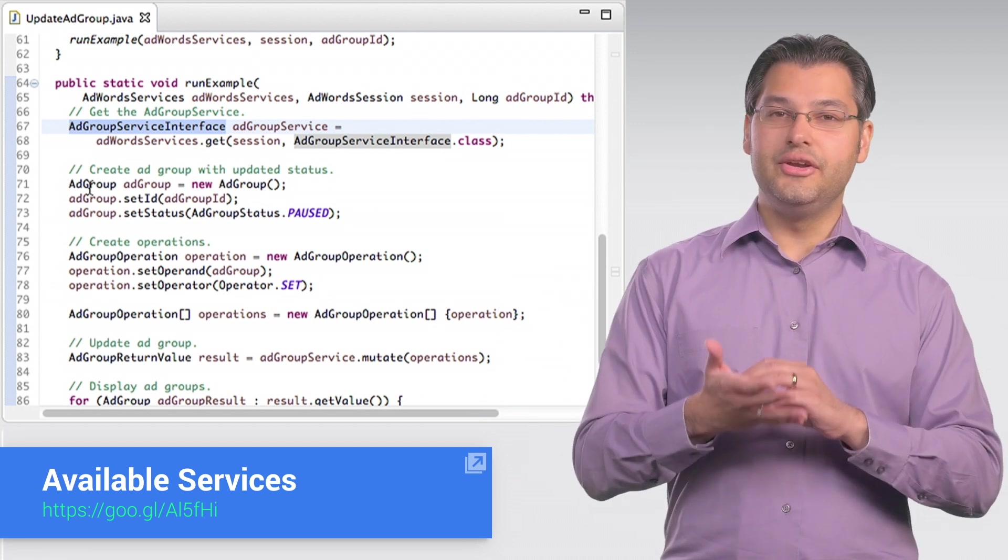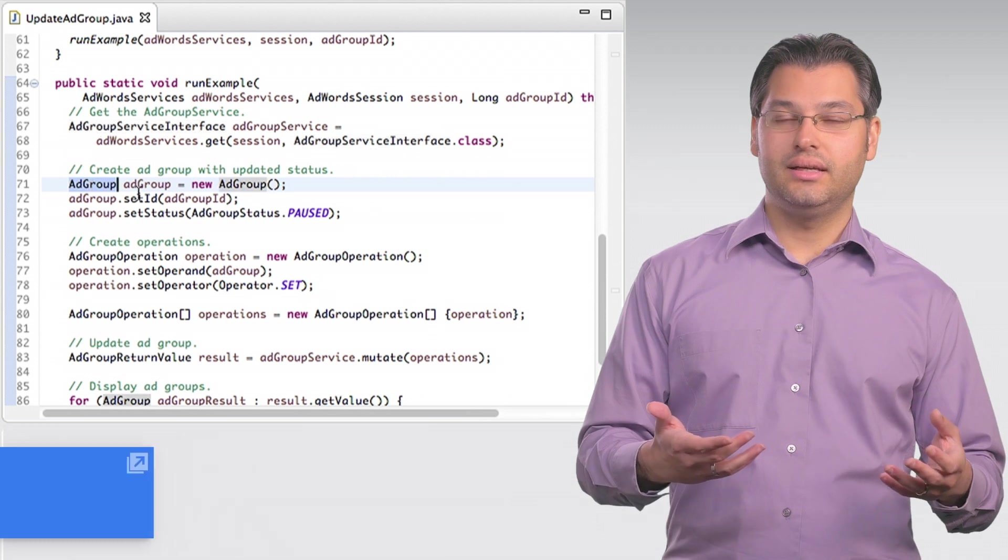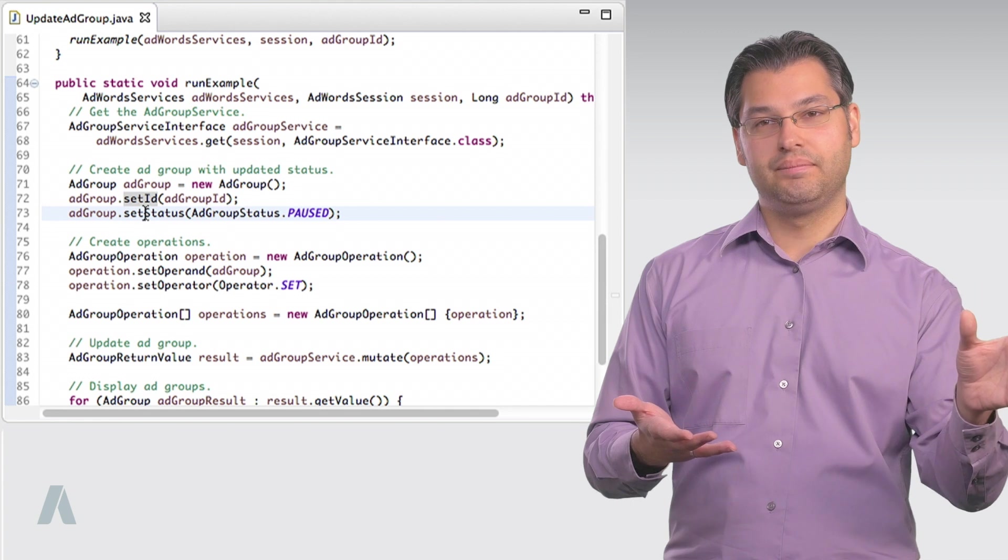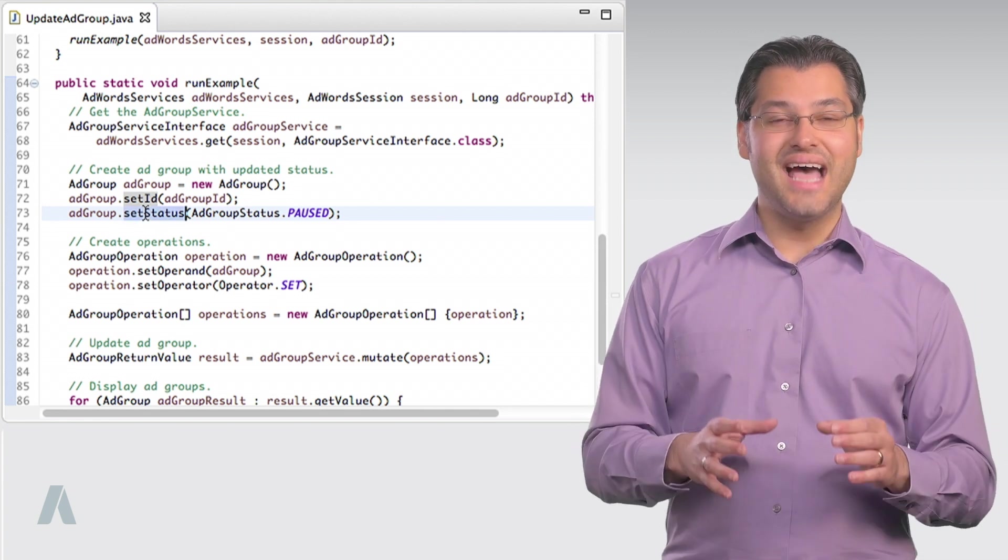Then it creates a new ad group object. It sets the ID of the new object to the ID of the ad group that it wants to update. Then it sets the status to pause.